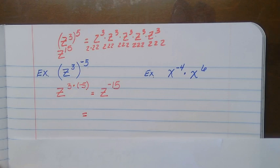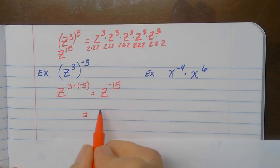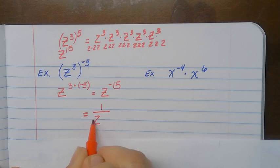So I take care of the multiplication of powers first, and then rewrite with a positive exponent by taking it to the denominator, giving one over z to the fifteenth.